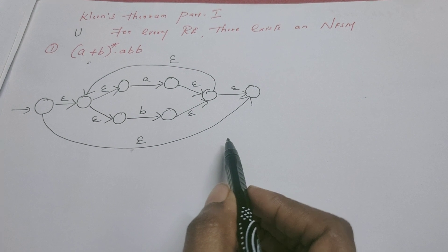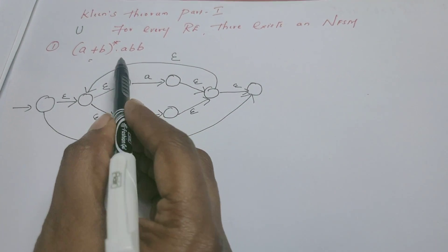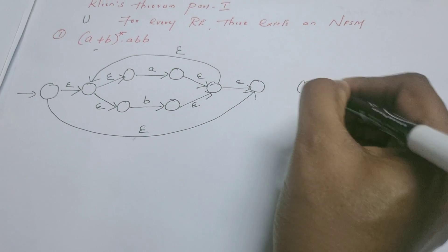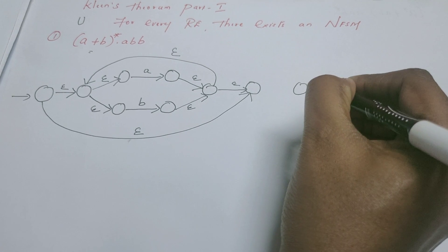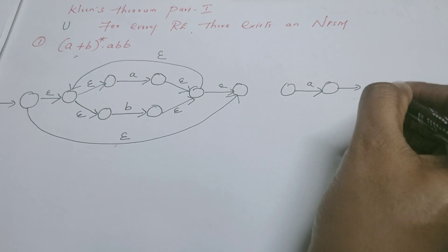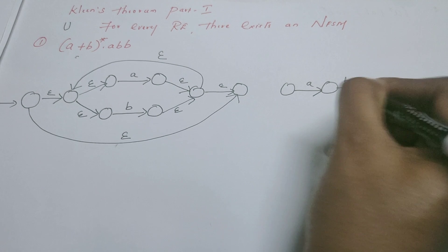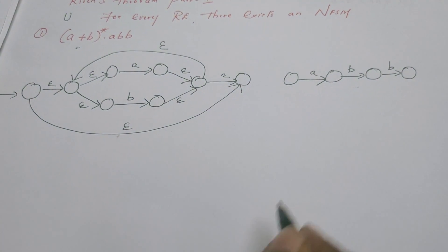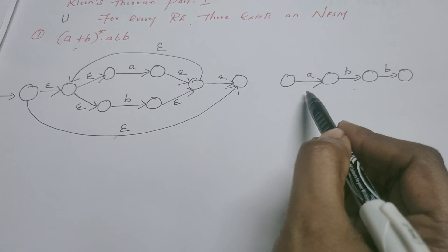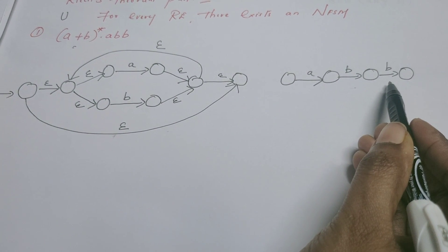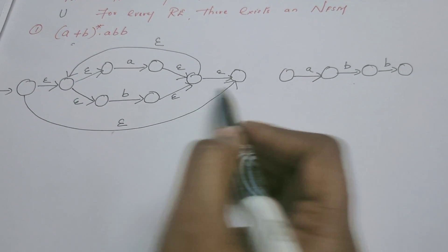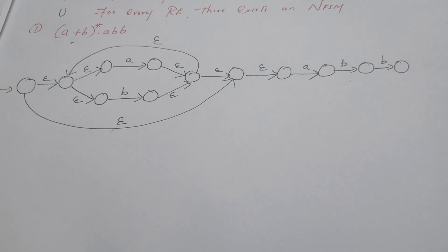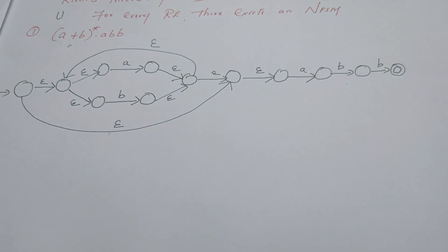Now (a union b)* must be followed by the machine which recognizes abb. This is very simple. I can assume a machine like this: a machine recognizing a, immediately followed by a machine for b, and again followed by another machine for b — so we have a machine for abb. These individual machines can be connected via epsilon transitions also. So now you would have guessed the final state — this is the final state.